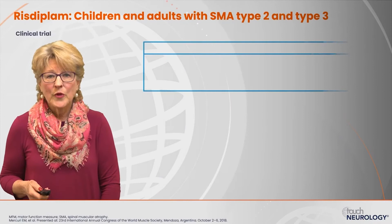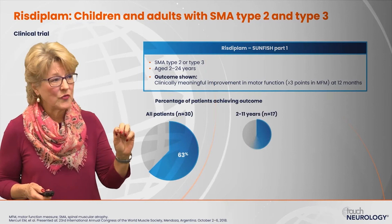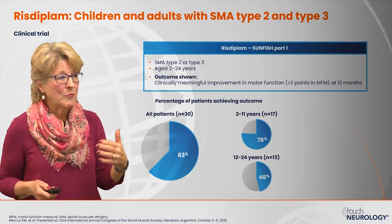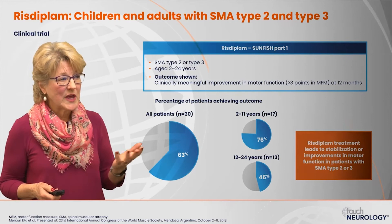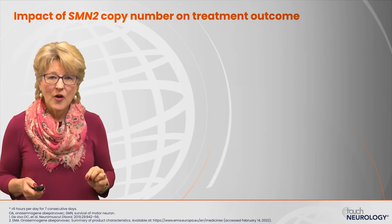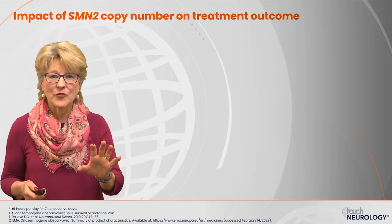With risdiplam, in the SUNFISH trial looking at patients aged 2 to 24 years with type 2 and type 3 SMA, there was a meaningful improvement in the motor function scale — greater than 3 points — at one year of treatment. It's important to recall that SMN2 copy number really affects treatment outcomes. The two most important factors are the patient's symptomatology and phenotype at the time of treatment, as well as copy numbers, and those two things are obviously related.